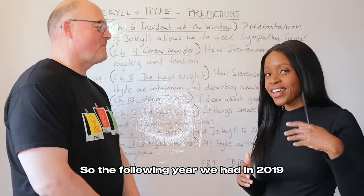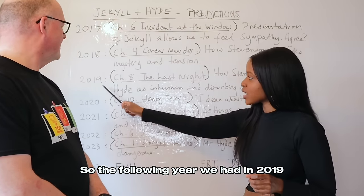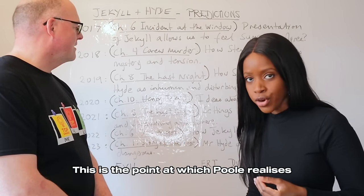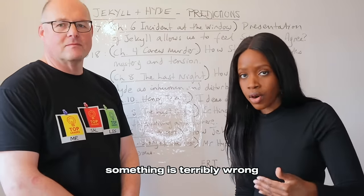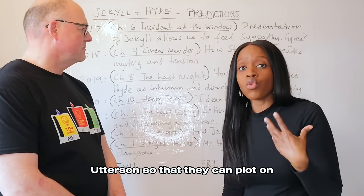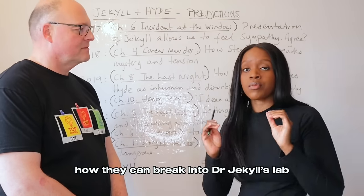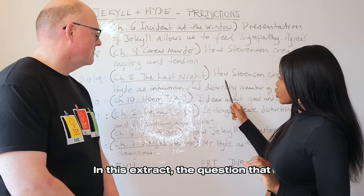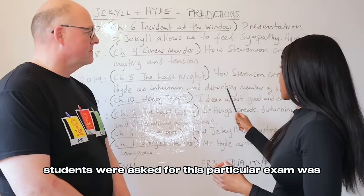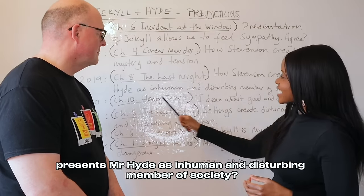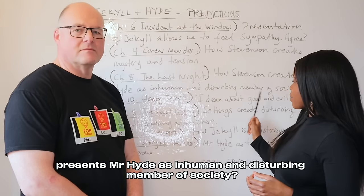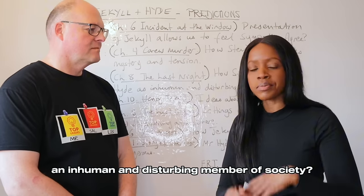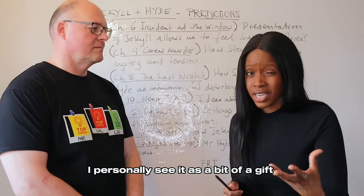In 2019, students were given an extract from chapter eight — the last night. This is the point at which Poole realises something is terribly wrong and goes to find Utterson so they can plot how to break into Dr. Jekyll's lab. The question asked how Stevenson presents Mr. Hyde as inhuman and disturbing. I personally see this as a bit of a gift, because when I think about past paper questions on Jekyll and Hyde, they tend to be quite challenging.